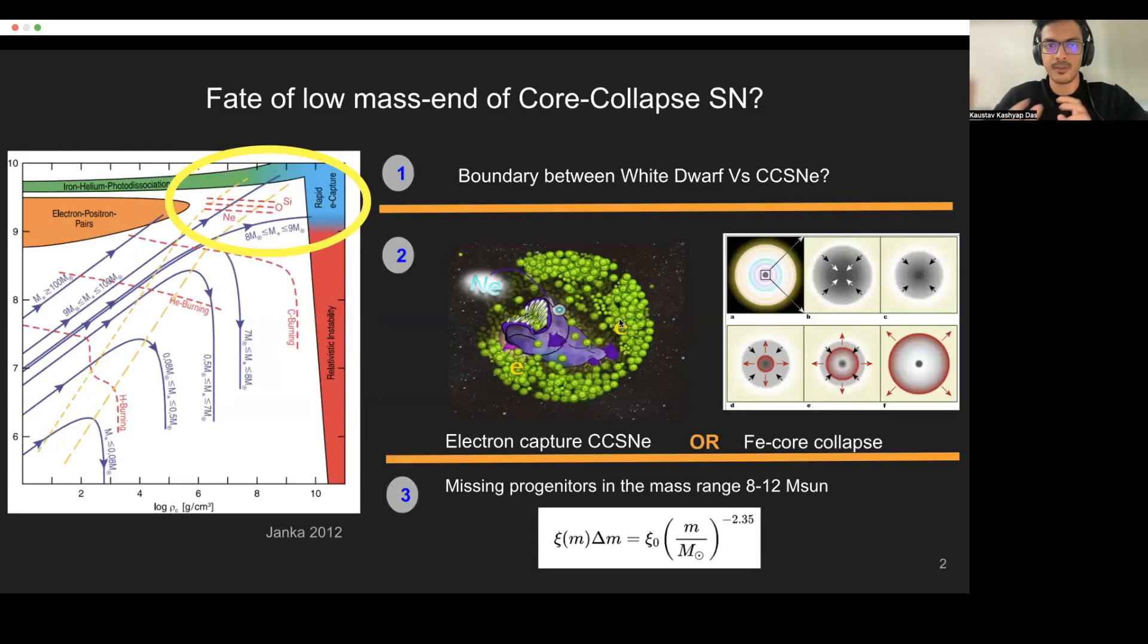Just to give a brief background and motivation for this work, there are a number of unknown questions and mysteries regarding the fate of low-mass end of core-collapse supernovae, which is basically the 8 to 12 solar mass regime. Some of these mysteries include, for example, where does the white dwarf formation and core-collapse supernovae boundary lie?